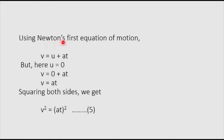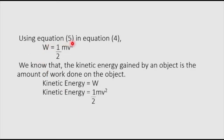Now using Newton's first equation of motion, v = u + at. Since u = 0, we get v = at. Squaring both sides, v² = (at)² — equation 5. Using equation 5 in equation 4, we get W = ½mv². We know that the kinetic energy gained by an object equals the work done on the object. Hence, kinetic energy = ½mv².